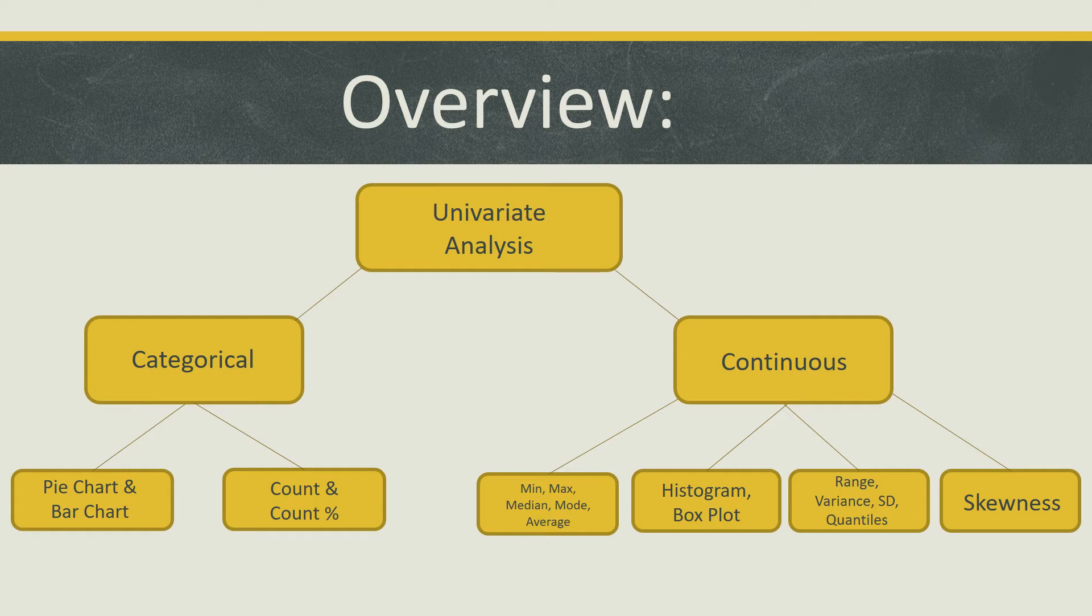The range of data, variance, and standard deviation are additional measures that are used to quantify the amount of variation or dispersion present. Another method I will briefly touch on is skewness, which is a measure of asymmetry.